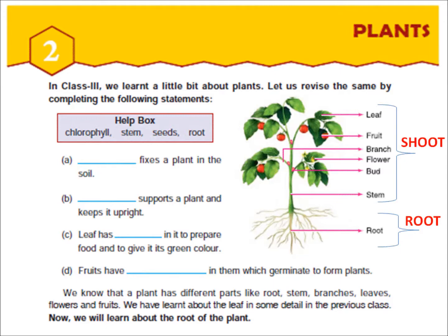Plants are living things just like us. What are all of you observing in this picture? You are observing different parts of the plant. We already know that plants have different parts like root, stem, branches, leaves, flowers and fruits. We have read it in the previous class.